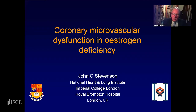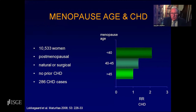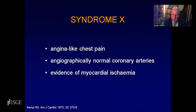Thank you, Andrea. I'm going to talk about microvascular dysfunction in estrogen deficiency. We know that estrogen is important in terms of cardiovascular function, and estrogen deficiency can lead to coronary problems. This slide shows the effect of age at menopause on risk of coronary heart disease — the younger the age of menopause, the bigger the increased risk. So menopause and estrogen are important in cardiovascular function.